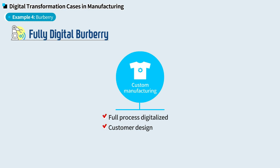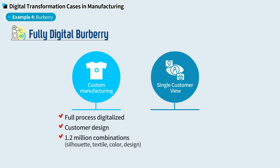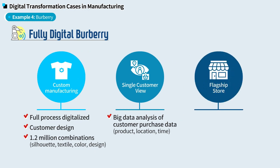For that, Burberry provides 1.2 million combinations of silhouettes, textiles, colors, and designs that customers can select from. Burberry has also built a single customer view using big data analysis, through which they can identify the type of product, place, and time of customer purchases. In their flagship stores, they have set RFID tags on products so customers can check them with video clips through mirrors near the shelf.